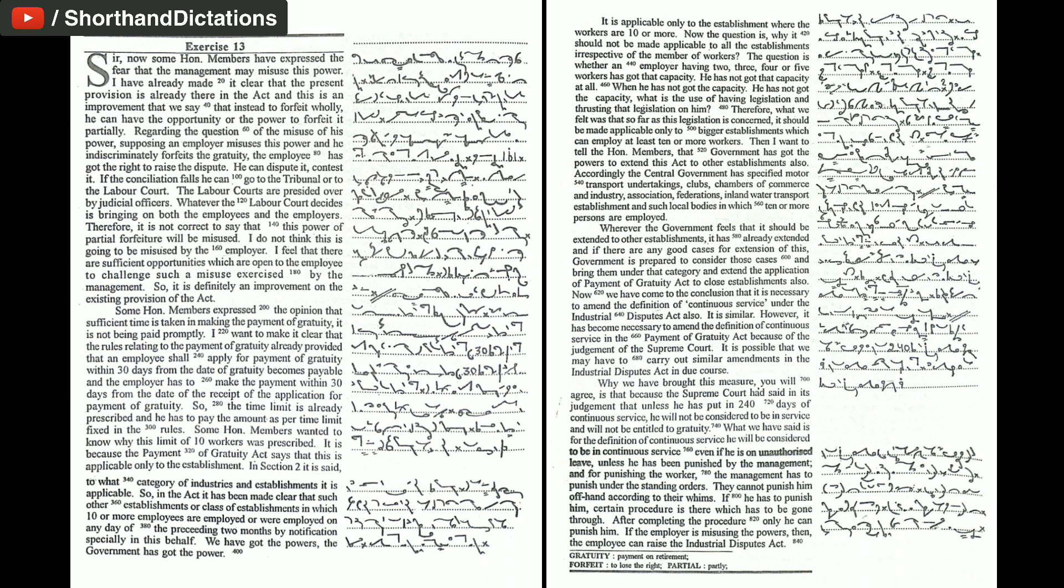It is because the payment of gratuity act says that this is applicable only to the establishment. In section 2, it is said to what category of industries and establishments it is applicable. So, in the act it has been made clear that such other establishments or class of establishments in which 10 or more employees are employed or were employed on any day of the preceding 2 months.